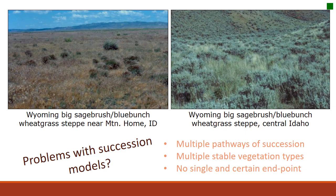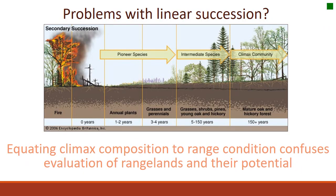One of the problems with successional models is that there are often multiple pathways of succession — it's not one linear path. There are also multiple stable vegetation types; both communities are relatively stable and are likely not going to change until some disturbance occurs. There's no single and certain endpoint when we think about succession on rangelands. We can have really functioning rangelands with pioneer, intermediate, and climax species, and what becomes key is seeing a mosaic of different vegetation characteristics across the landscape.